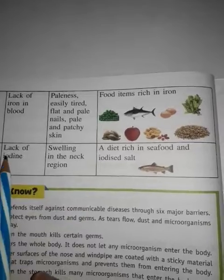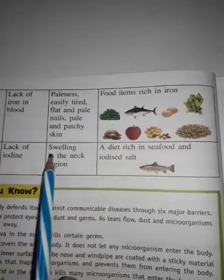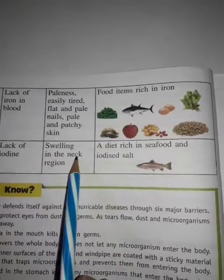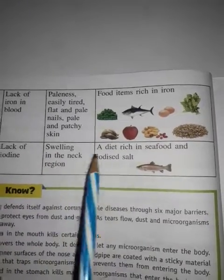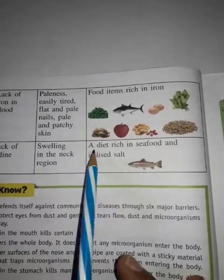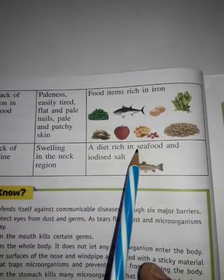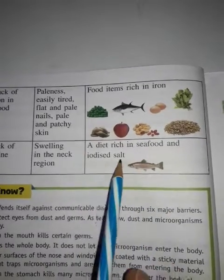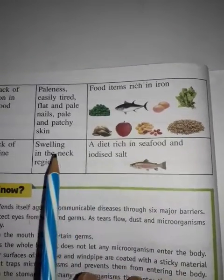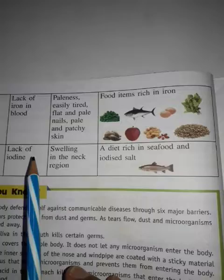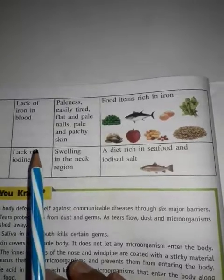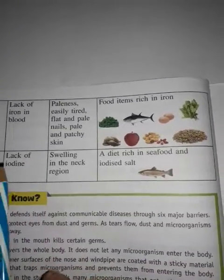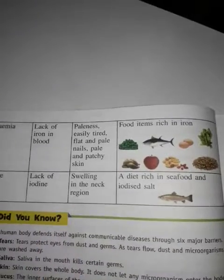Goiter is caused by a lack of iodine. Symptom: swelling in the neck region. Cure: a diet rich in seafood and iodine salt. Thank you, students.